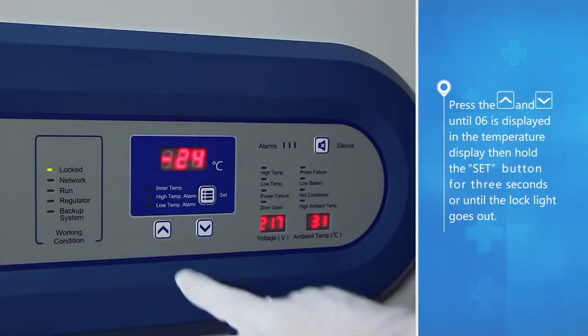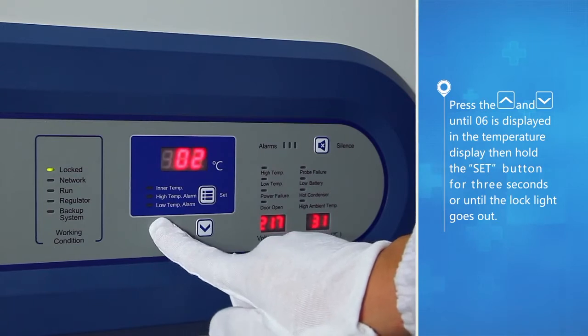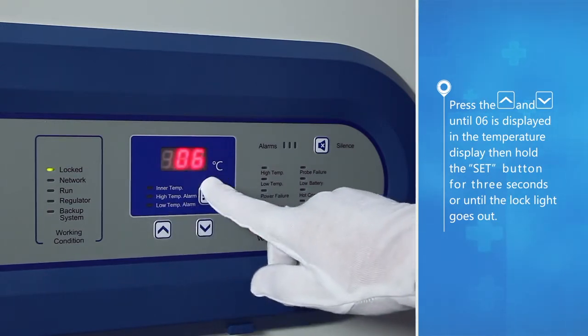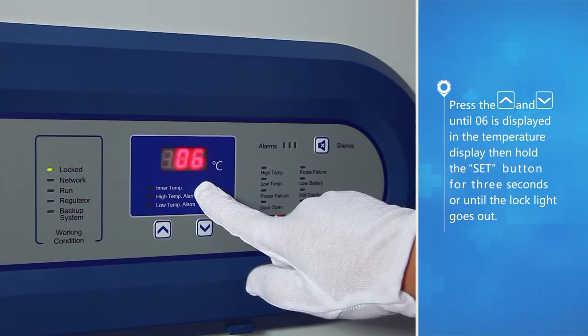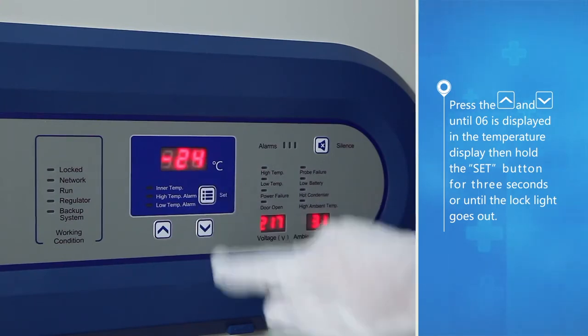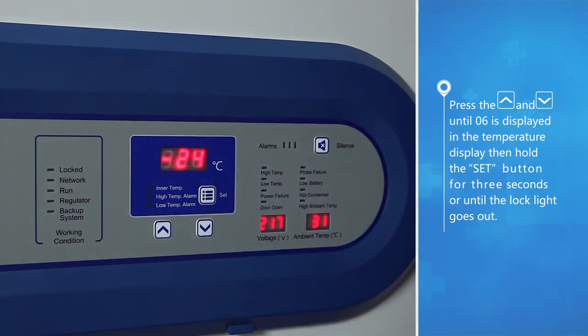Press the up button and down button until 06 is displayed in the temperature display then hold the set button for 3 seconds or until the lock light goes out.